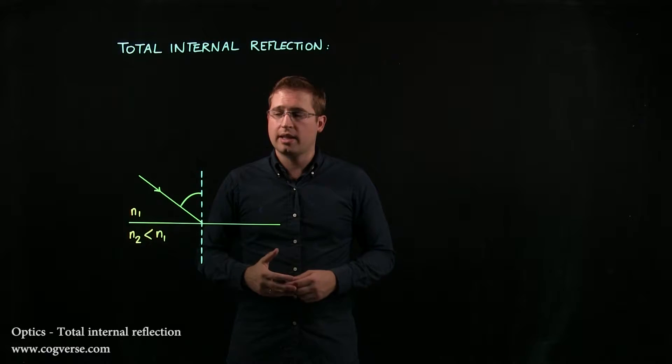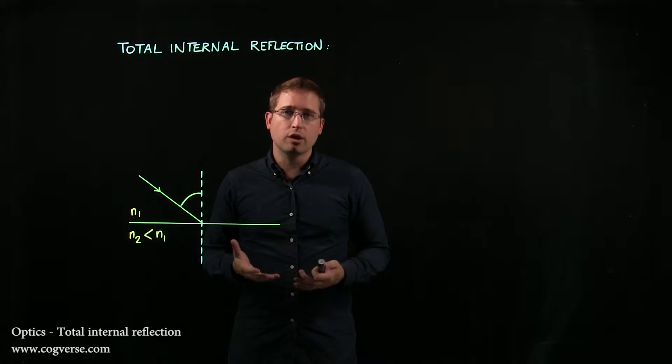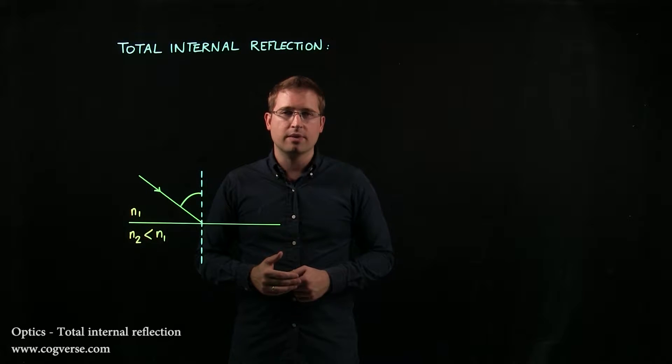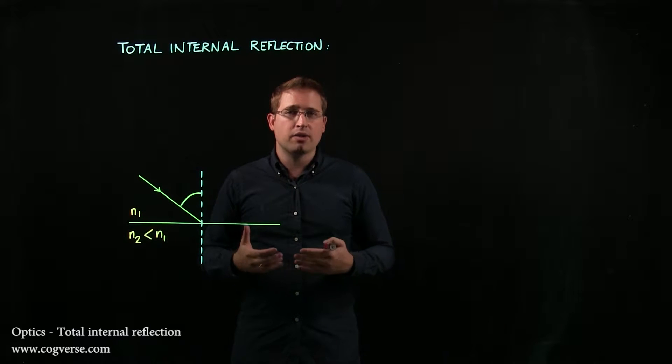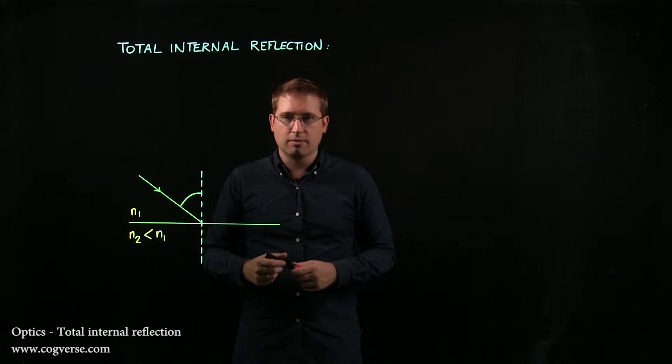We've discussed before the fact that when light enters a medium with a lower index of refraction, it bends away from the normal. And in fact, it might bend away too much and not enter the second medium.